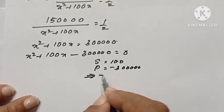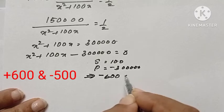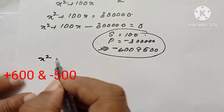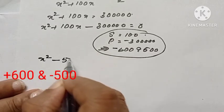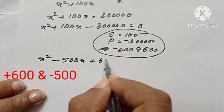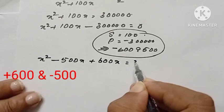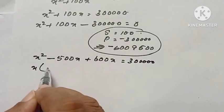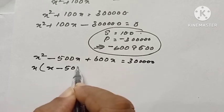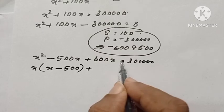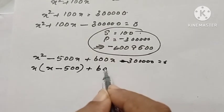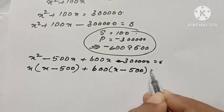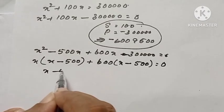The numbers are minus 600 and 500. Here splitting the middle term now. x squared minus 500x plus 600x minus 3 lakh equal to 0. x is common, x minus 500. From the next term, 600 is common. x minus 500 equal to 0.